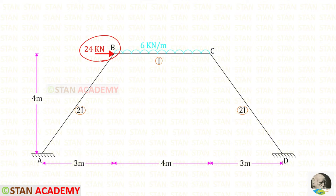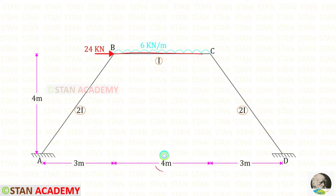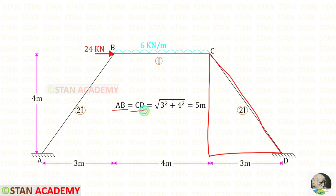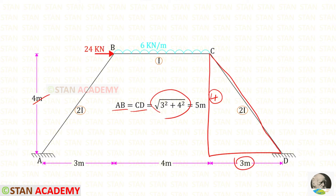So in this frame, the sway will occur towards the right side. This frame is symmetrical with respect to dimensions. The length of BC is given as 4 meters. We have to find the inclined length of AB and CD — both will be the same. Using Pythagoras' theorem on the triangle with a base of 3 meters and a height of 4 meters, we get the inclined length: root of 3² plus 4² equals 5 meters.